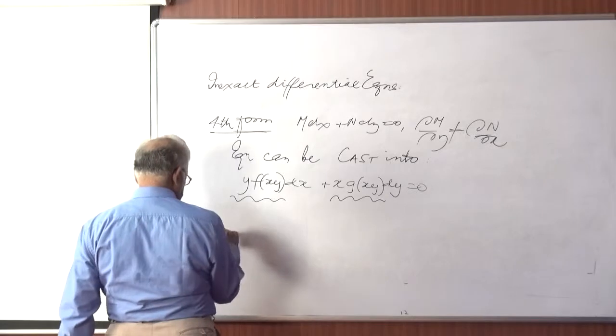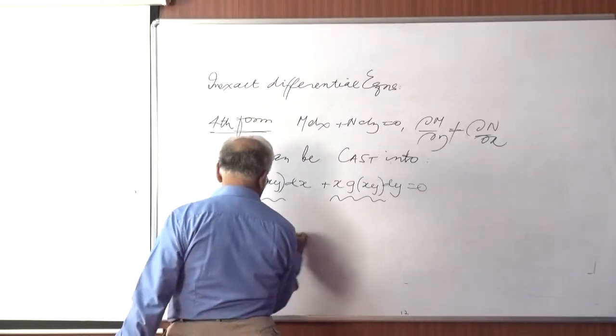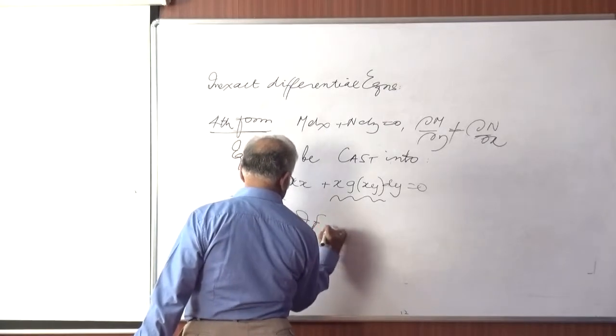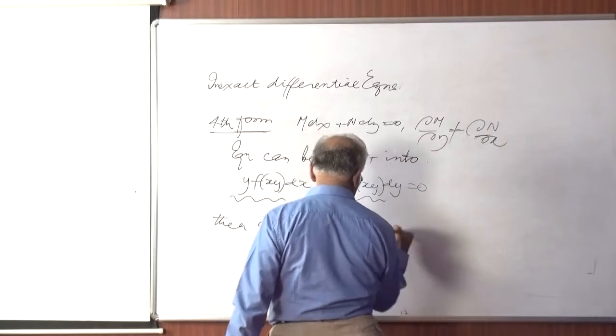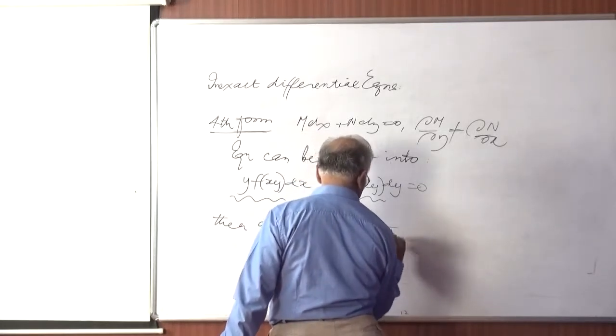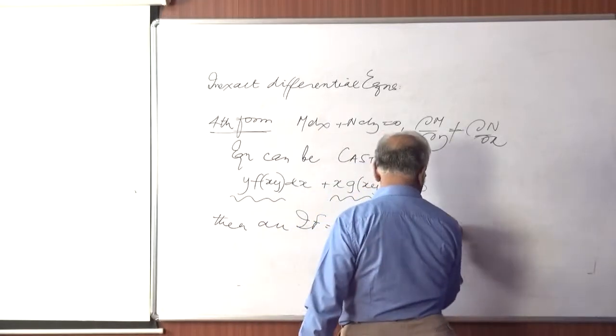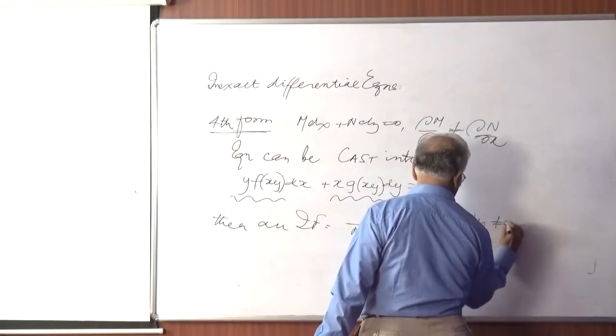Then an IF is equal to 1/(mx - ny), assuming that mx - ny is not equal to 0. This is the fourth form.